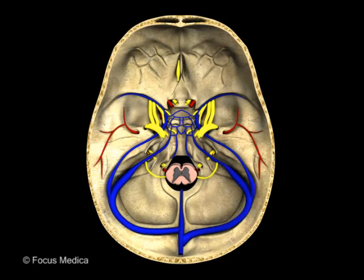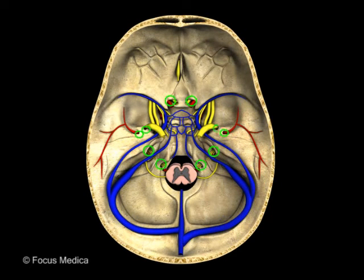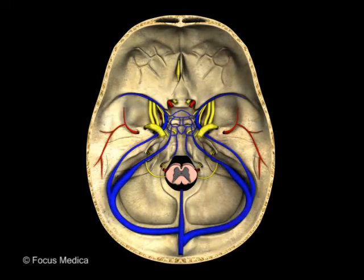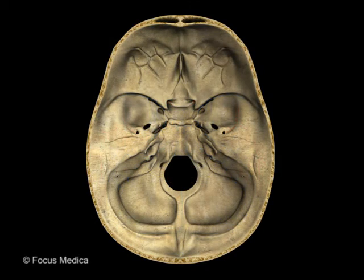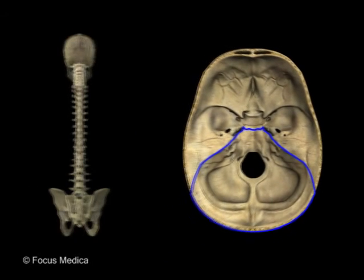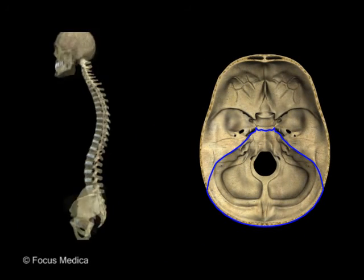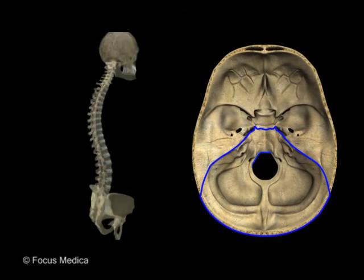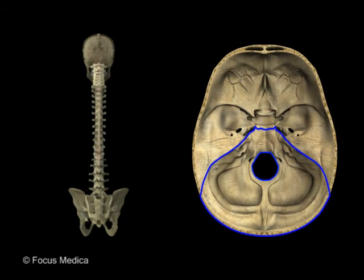Cranial nerves 1 to 12, as well as blood vessels, are transmitted through a number of foramina, which are well defined and named. The posterior cranial fossa is in continuity with the vertebral canal at the foramen magnum.